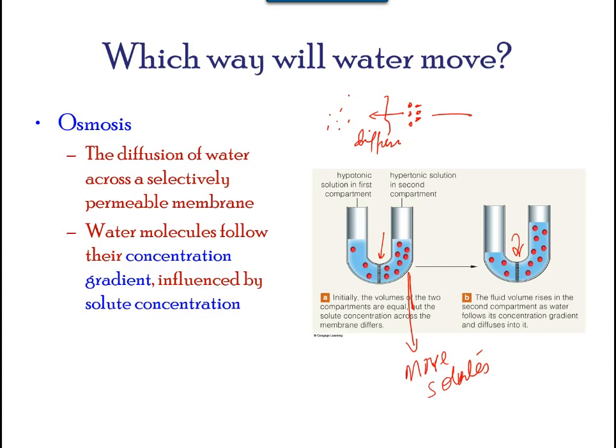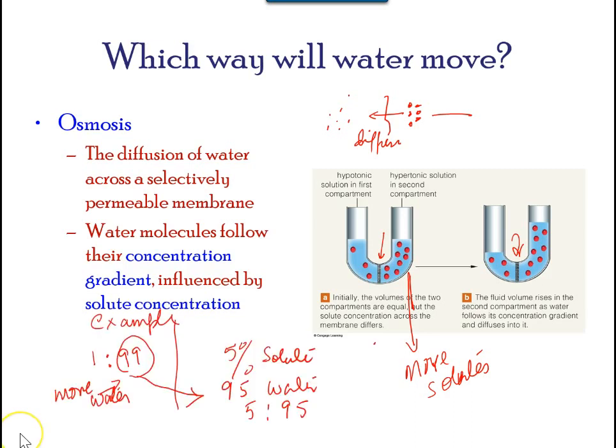Water has a concentration gradient in this system. Therefore, water will diffuse down its concentration gradient, crossing the membrane to the side where it is less concentrated. This diffusion of water through the membrane — osmosis — will continue until the concentration gradient of water goes to zero. Osmosis proceeds constantly in living cells.